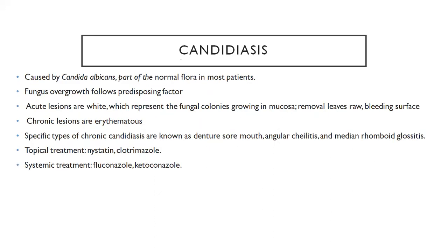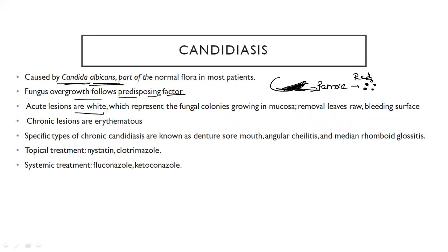Now coming to fungal infections. The fungus causing candidiasis is Candida albicans, which is present in normal flora but overgrows following predisposing factors. The lesions are white. If you try to remove the white lesion, you can see bleeding and it becomes completely red — this is called oral thrush. Chronic lesions are erythematous. Specific types of chronic candidiasis include denture sore mouth and angular cheilitis at the lip region. Median rhomboid glossitis can also be seen.